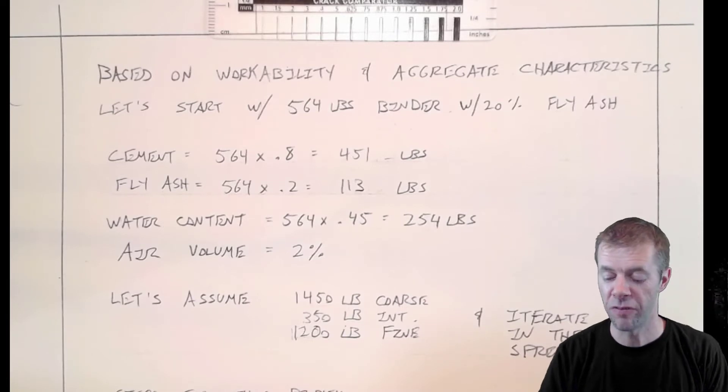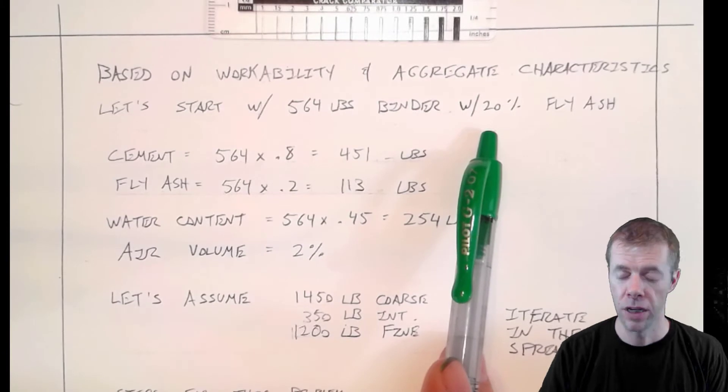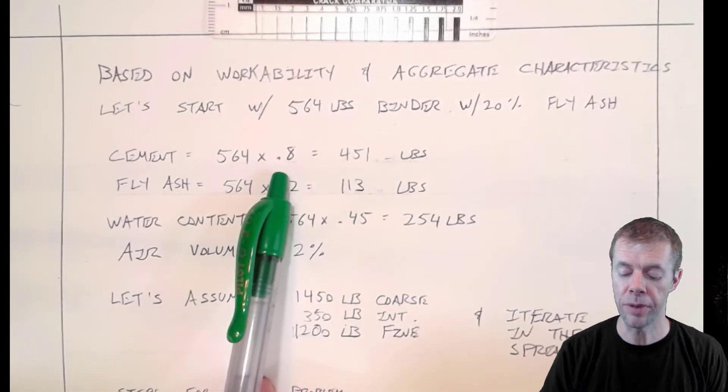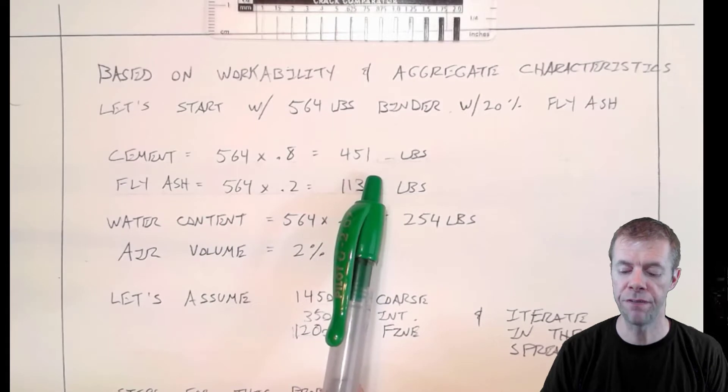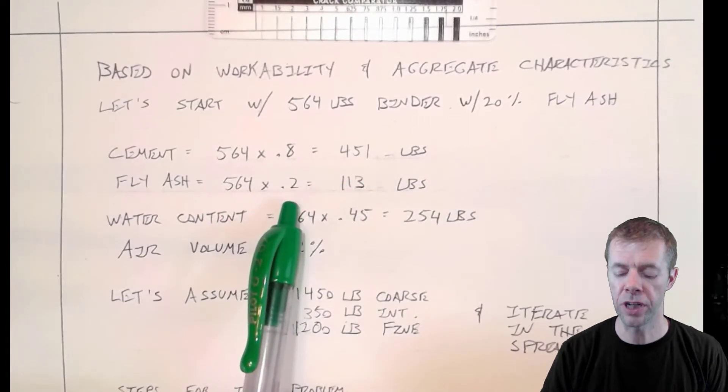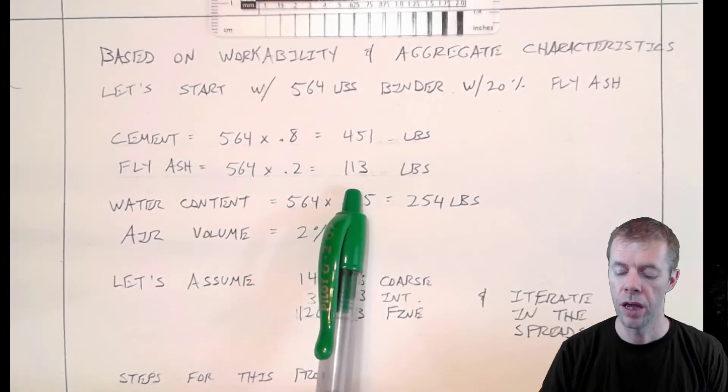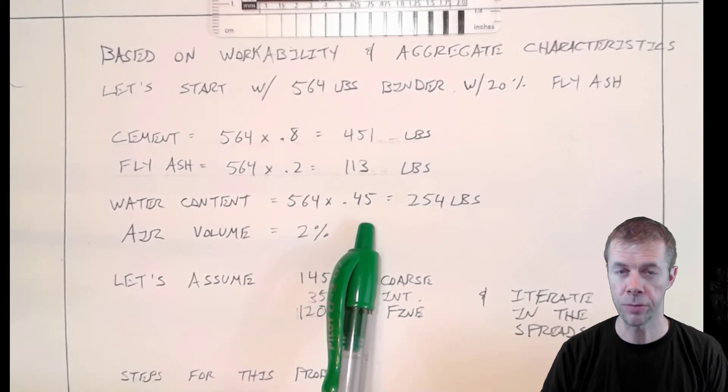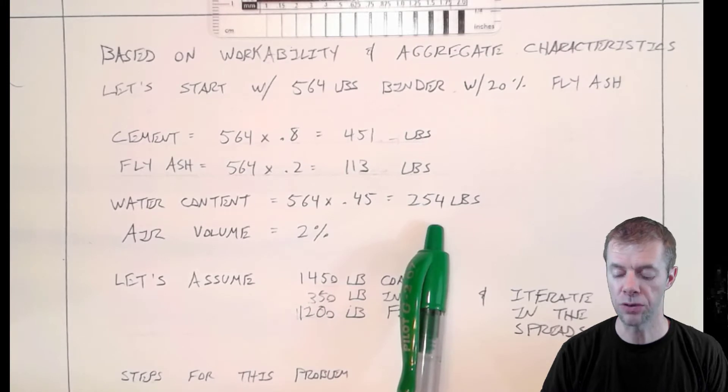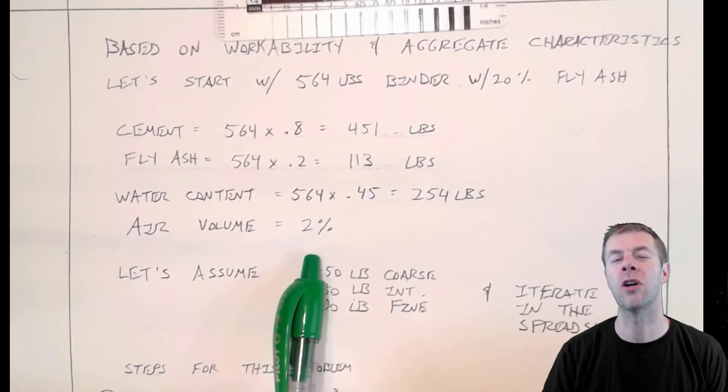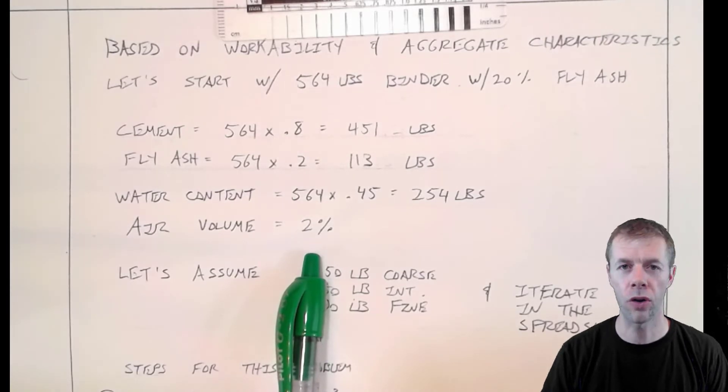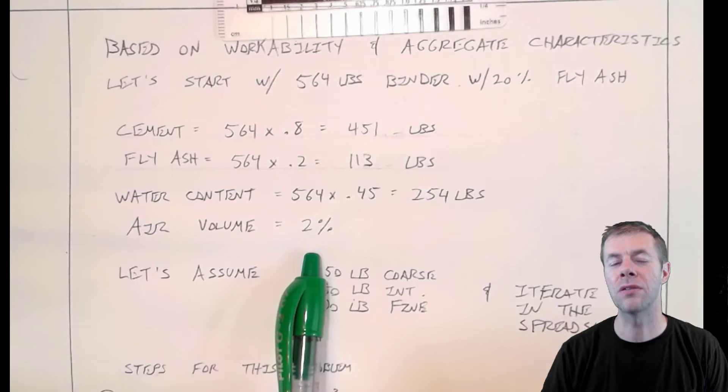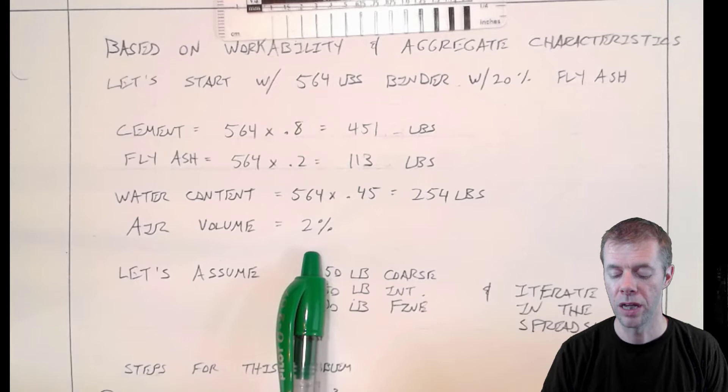We're going to use this chart to help us decide how much binder content to use. Now we said this was going to be pumped concrete. So because of that, we'd expect about a six inch slump or 564 pounds of total binder content. We got our binder content, 564 pounds. We're using 20% fly ash. That means 80% of the binder is cement, 451 pounds. And 20% is fly ash, 113 pounds. Now our water content is total binder multiplied by 0.45, our water cement ratio, to get 254 pounds. And we're going to be using 2% volume of air. Why is that? Because it's not air entrained, it's not external concrete. We're just assuming that's something called entrapped air. That's just the air inside the concrete from mixing.